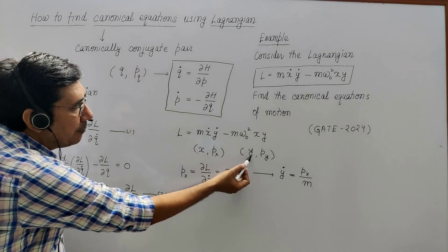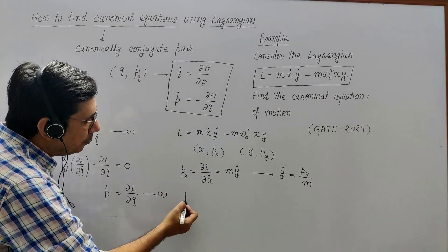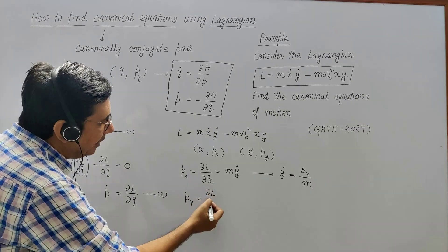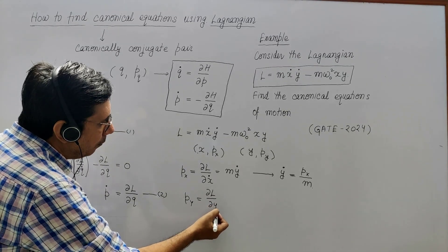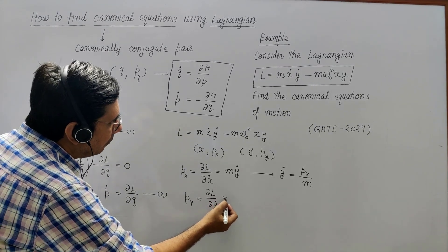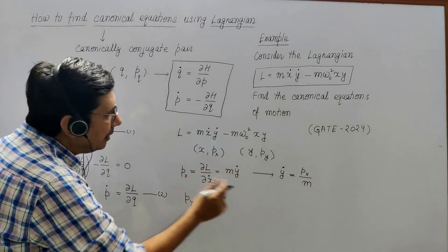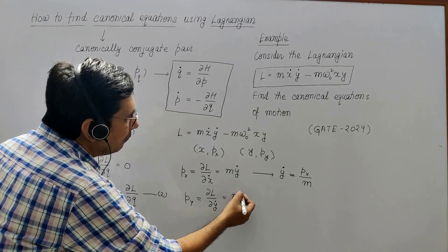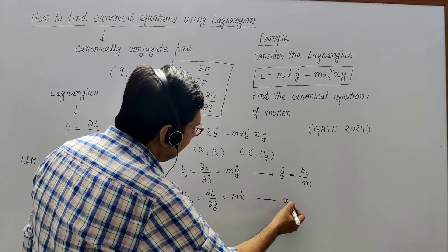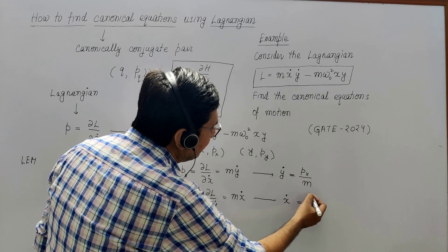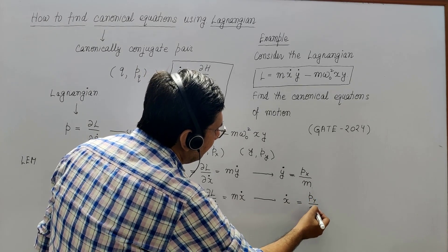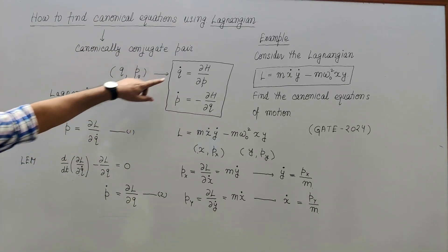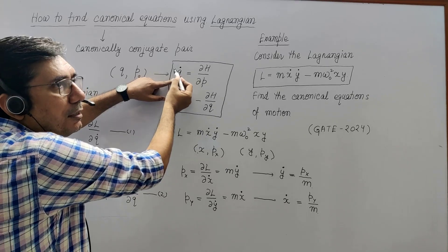Now for y, its conjugate momentum py = ∂L/∂ẏ. Since ẏ appears in mẋẏ, taking the partial derivative gives py = mẋ. Therefore ẋ = py/m. So we have found the q̇ equations using the Lagrangian rather than the Hamiltonian.